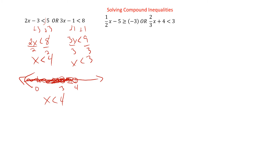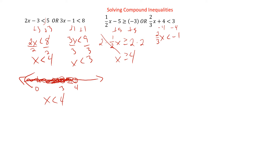So how about this one? It's the same — they're just fractions and stuff. We're going to do each of them separately. First one, we're going to add five to both sides, so we have one half x is greater than or equal to two, times two to get rid of that one half, x is greater than or equal to four. Then over here, we can subtract four, so two thirds x is less than negative one. Multiply by three halves, so x is less than negative three halves. We multiplied by a positive number, so we don't have to flip the sign — but it's something we always want to watch out for.